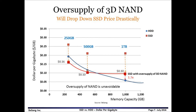This graph shows the prediction. Price parity may happen at the low capacity market, and SSD may take over HDD because of battery functionality and favorable price. In the high capacity market, the price difference will remain in the 1.7 times to 2.5 times range. Therefore, SSD and HDD will coexist.